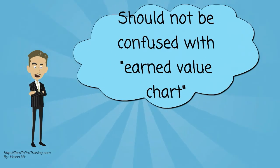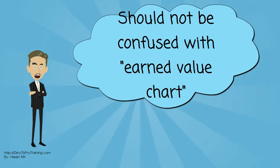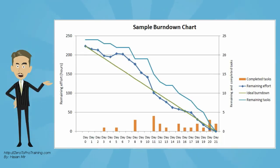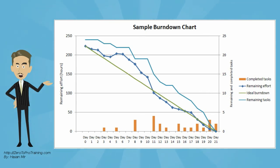The Sprint Burndown Chart should not be confused with an Earned Value Chart. Here is a sample Burndown Chart for a completed iteration, showing remaining effort and tasks for each of the 21 work days of the 1-month iteration.